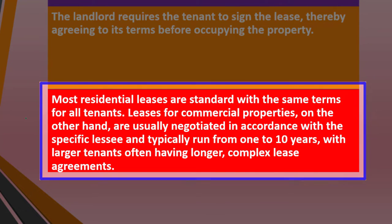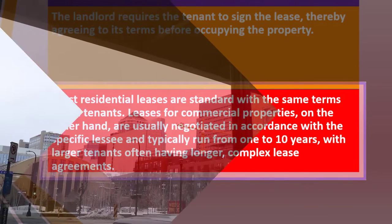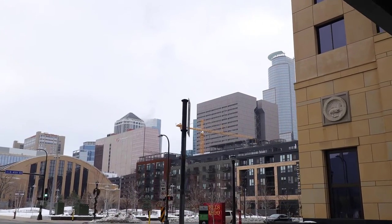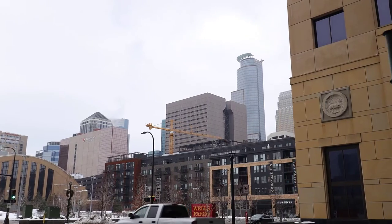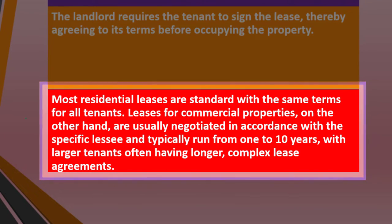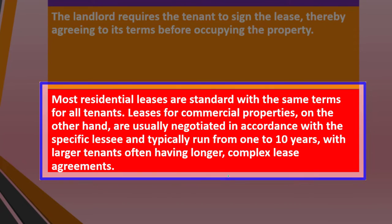Most residential leases are standard with the same terms for all tenants. If you're in an apartment complex or working with a leasing company, the leases typically follow a standard format. Leases for commercial properties, on the other hand, are usually negotiated according to specific leasing terms and typically run from one to ten years, with larger tenants often having longer, more complex lease agreements.